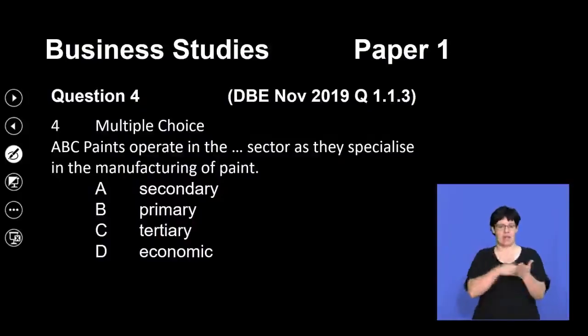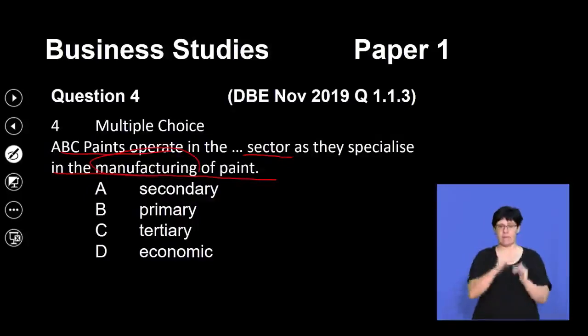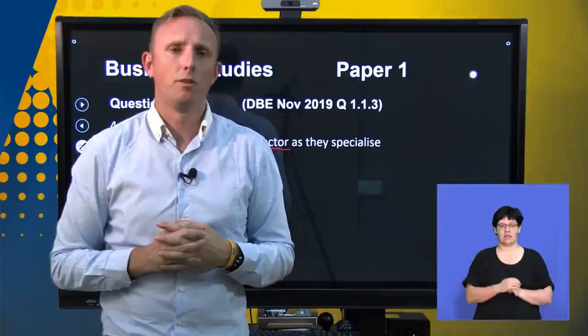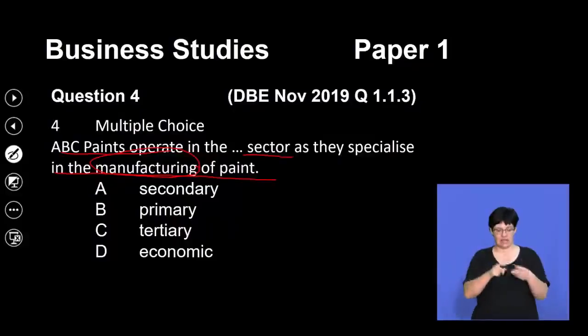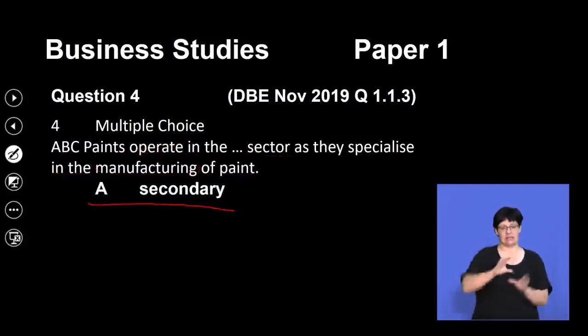The next question: ABC Paints operates in a certain sector and specialises in the manufacturing of paint. When you see the word manufacturing, that should ring a couple of bells in terms of what sector we're dealing with. The options are secondary sector, primary sector, tertiary sector, and economic sector. The answer is the secondary sector. Remember, the secondary sector has to do with manufacturing — they take raw materials from primary sector businesses and convert them into semi-finished or finished products. Do not confuse business environments and the sectors of the economy — they are very different things and it's a common mistake.